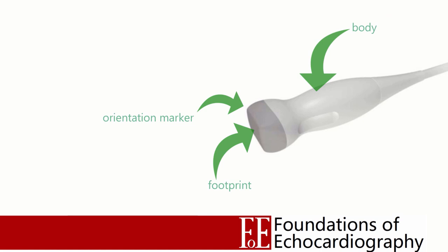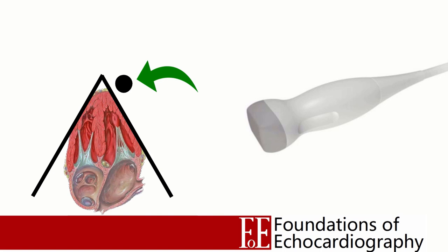To perform an echo we're going to require a phased array probe. The footprint is where a grid of piezoelectric crystals are housed, and behind that we have the body, which is where we hold the probe. On one side of the probe we have an orientation marker, and this lets us know which side of the probe lines up with the right-hand side of the sector as displayed on our screen.